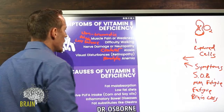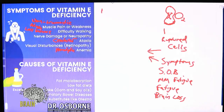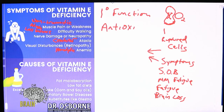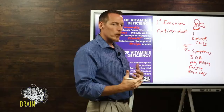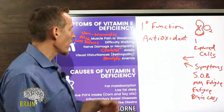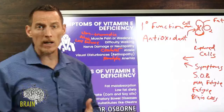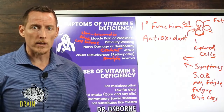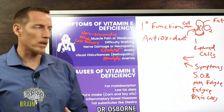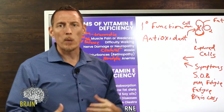Now let's discuss the primary function of vitamin E. It acts as an antioxidant, meaning it protects and preserves the structures in your body from free radical damage. One of the reasons vitamin E deficiency can cause hemolytic anemia is because it serves as an antioxidant in the cell membrane. Cell membranes are made of fat — a phospholipid bilayer — and fat oxidizes readily. Vitamin E is known as the fat protector: the fat-protecting antioxidant.